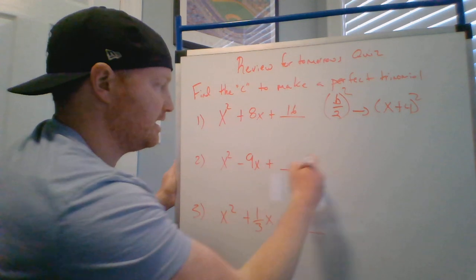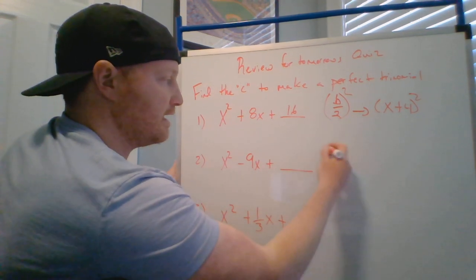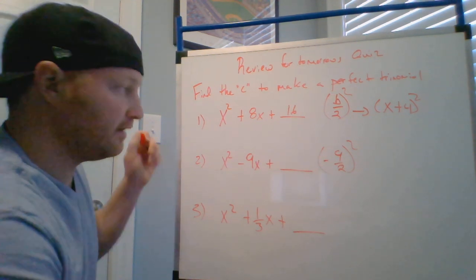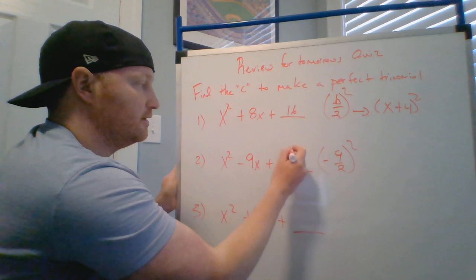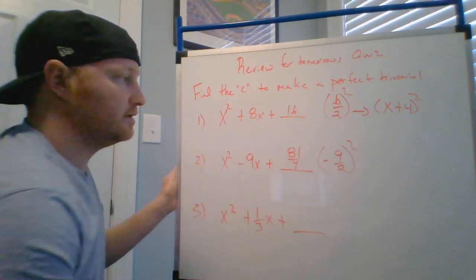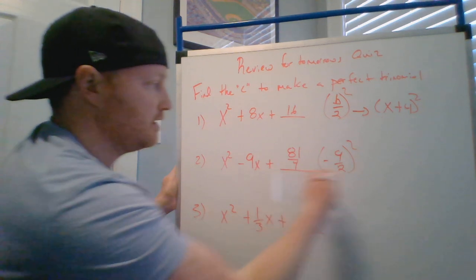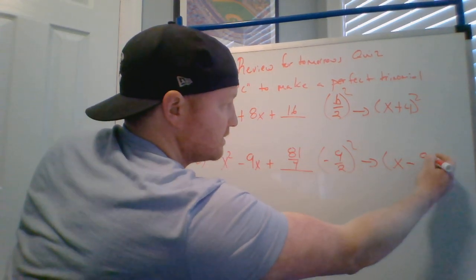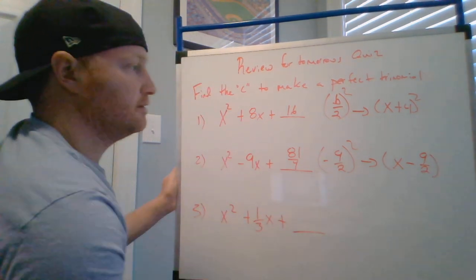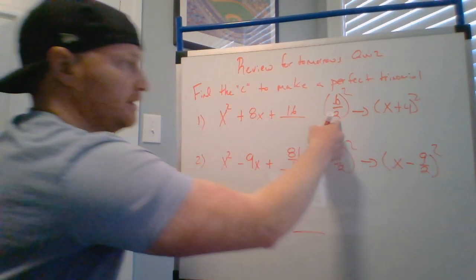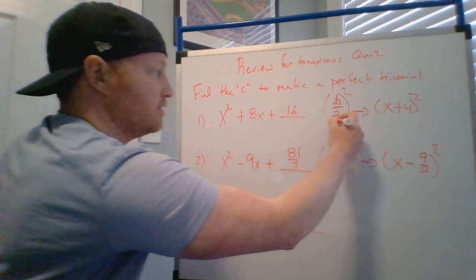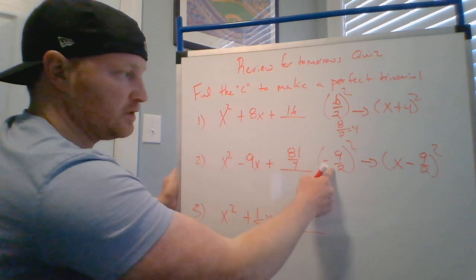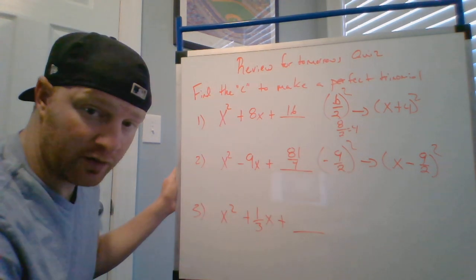Next, again we take half of negative 9 and we square it. So half of negative 9 squared is positive 81 fourths. So this becomes x minus 9 halves squared. To make this more clear for you, we got half of the B squared. This was A divided by 2 which equals 4. I'm not going to simplify this to a decimal. I want to leave it as a fraction, always going forward for this stuff.